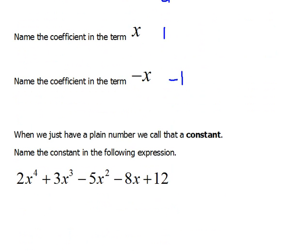All right now if we just have a plain number with no variable we call that a constant. Name the constant in this expression. Well the only thing without a variable would be 12. So our constant term is 12.